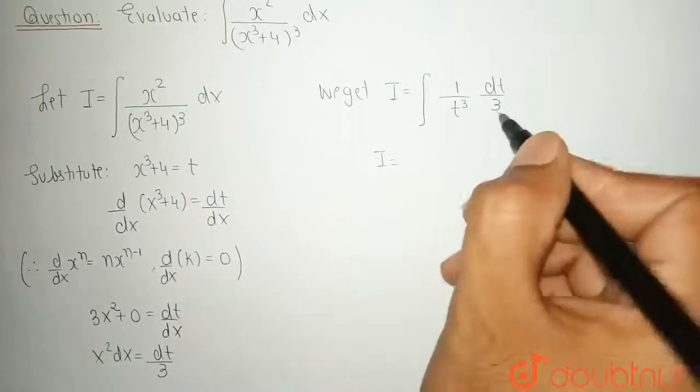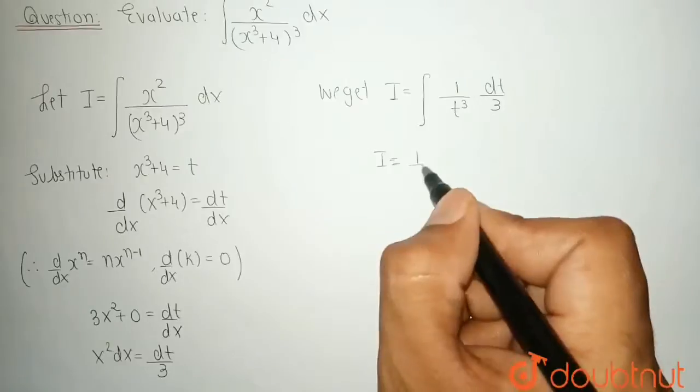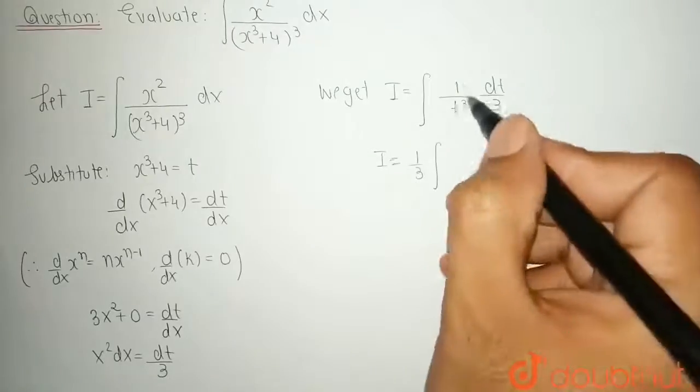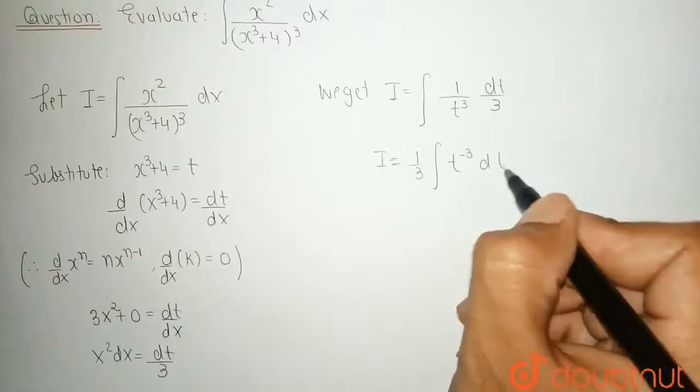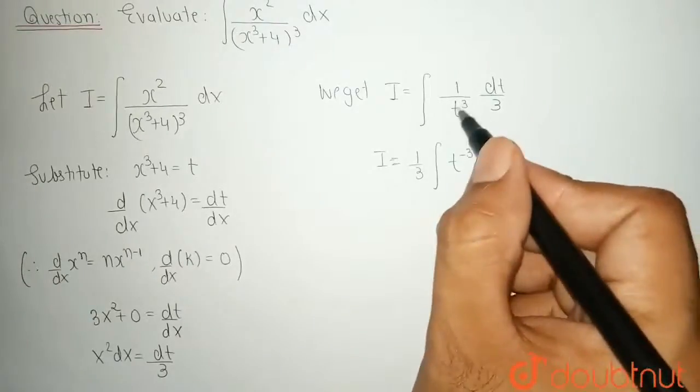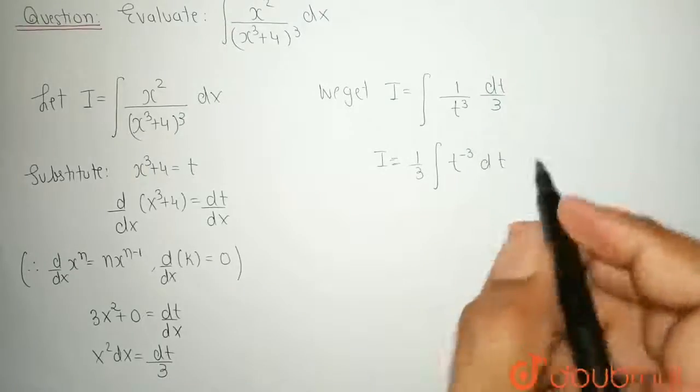Now, 3 is a constant so we can remove it out of our integral. So, the value of integral is 1 upon 3 integration 1 upon t cube is written as t to the power minus 3 dt. Because t cube is in denominator I can write it in the numerator with minus 3 as the power.